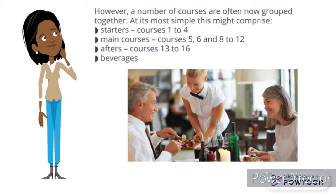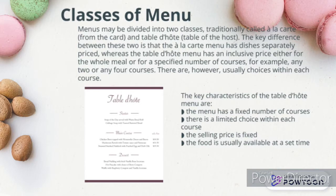Following the classic menu sequence, we also have classes of menu. Menus may be divided into two classes: traditionally called 'à la carte' (from the card) and 'table d'hôte' (table of the host). The key difference is that the à la carte menu has dishes separately priced, whereas the table d'hôte menu has an inclusive price either for the whole meal or for a specified number of courses, such as any two or any four courses.